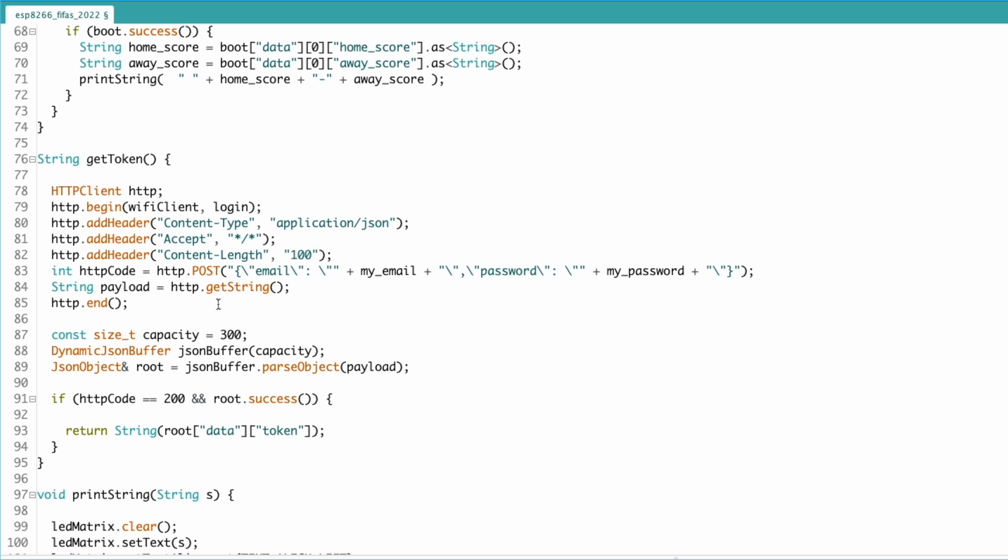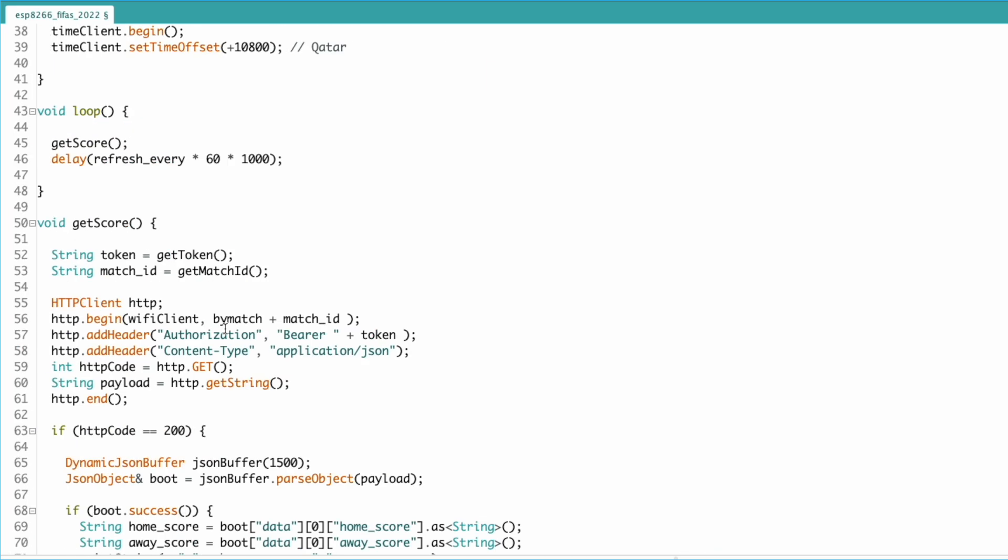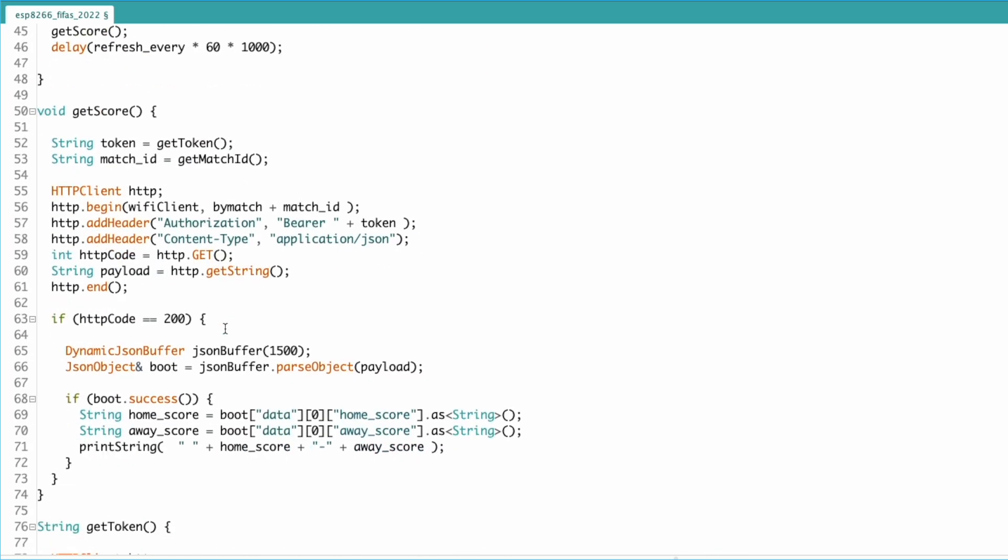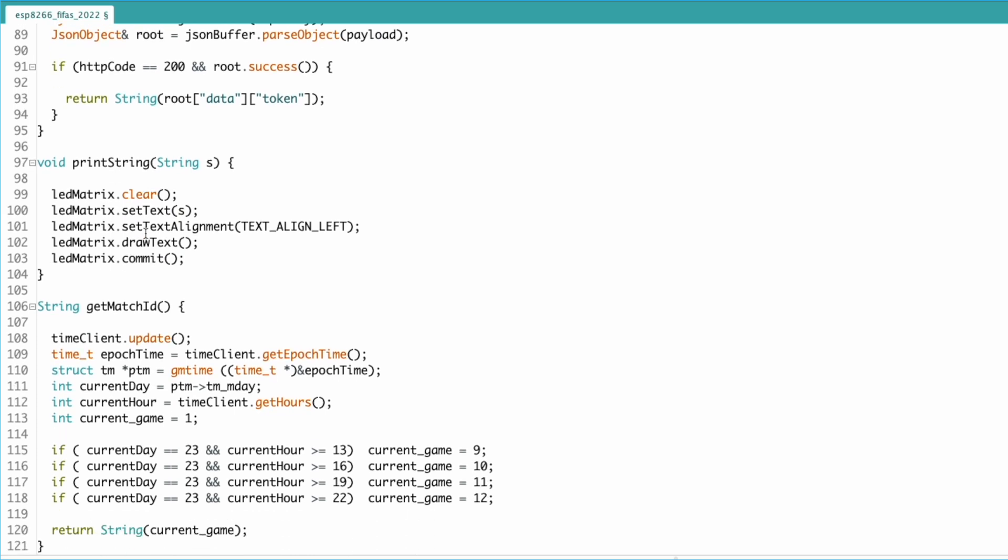The call returns a JSON that gets parsed and a token is extracted. This token is then injected in all future requests as part of the header. The get match ID function returns the ID of the match that is currently being played. This is done by comparing the FIFA schedule versus the current date and time in Qatar.